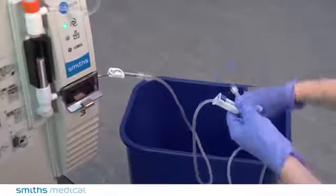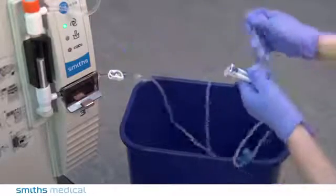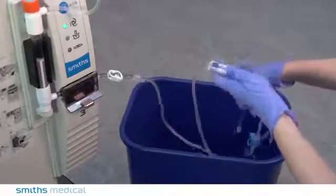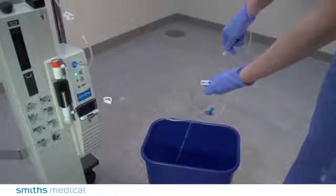Remove the lure cap from the distal end of the patient line. Open the lower pinch clamp and roller clamp. Allow the fluid to flow until no air is observed in the patient line.